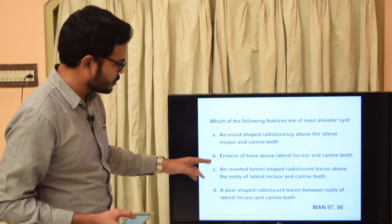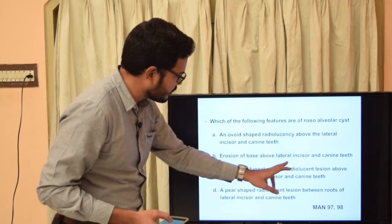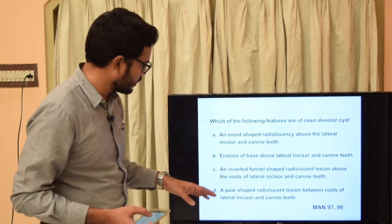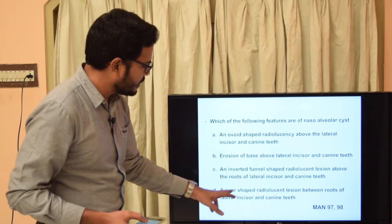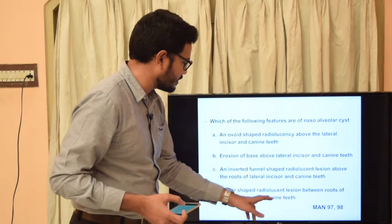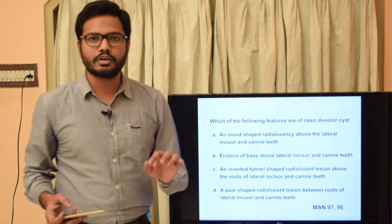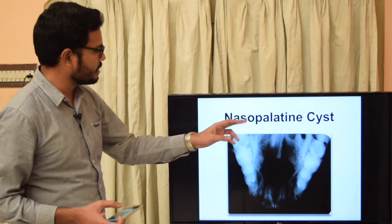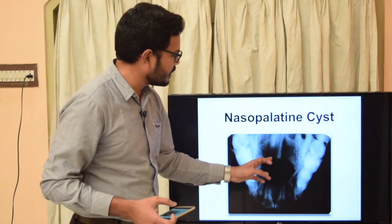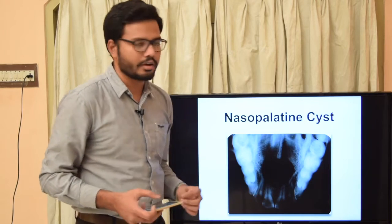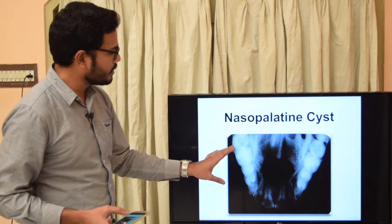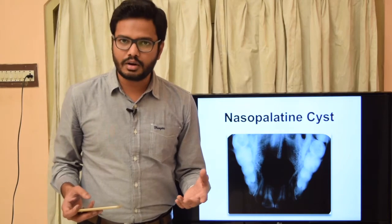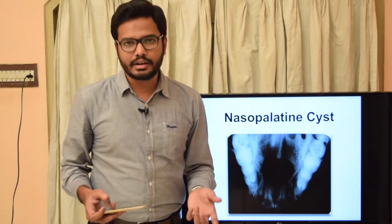Ruling out the other options: an inverted funnel-shaped radiolucent lesion is not the shape seen here, so we can rule out option C. Option D — a pear-shaped radiolucent lesion between roots of lateral incisor and canine — is the characteristic feature of globulomaxillary cyst, not nasoalveolar cyst. Nasopalatine cyst appears as a heart-shaped radiolucency present within the incisor canal, and is also called incisor canal cyst or median anterior maxillary cyst.